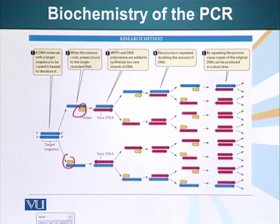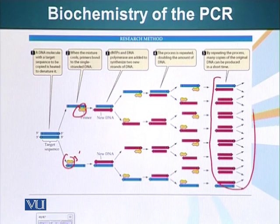The arrow is the 3 prime end. So we again raise the temperature, the DNA polymerase extends the primer and primer gets incorporated into the new DNA strand and from one DNA strand we have gone to two.